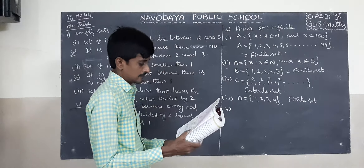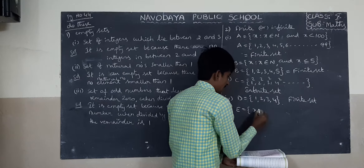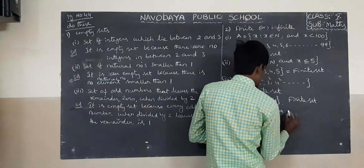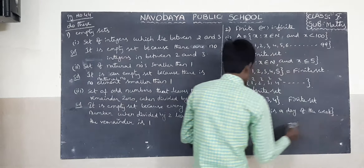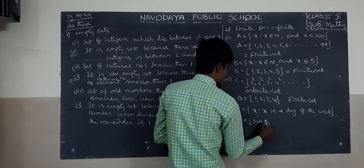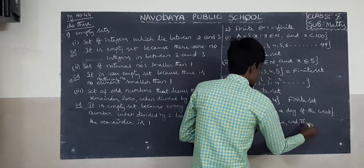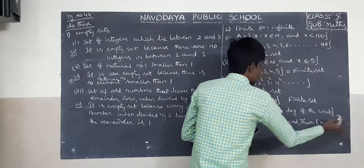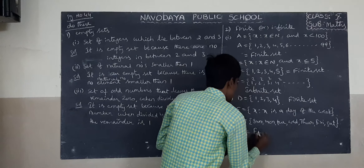Fifth one: E equals the set of x such that x is a day of the week. How many days are in a week? Sunday, Monday, Tuesday, Wednesday, Thursday, Friday, Saturday — only 7 days per week. So it is countable. So it is a finite set.